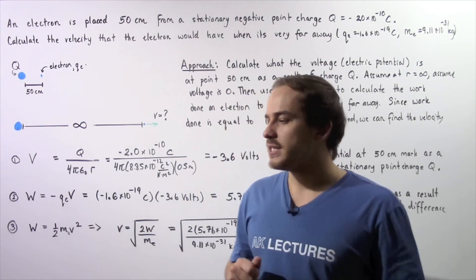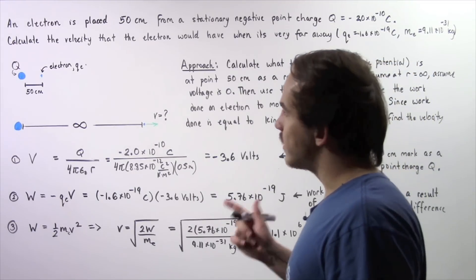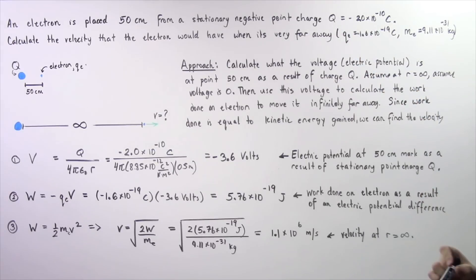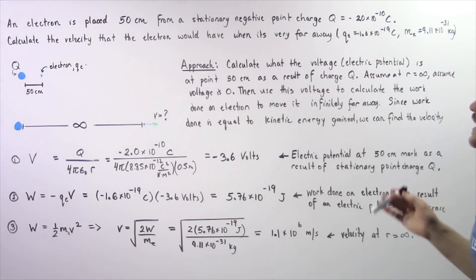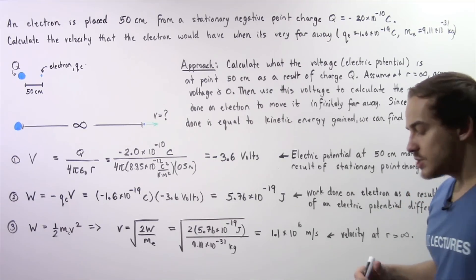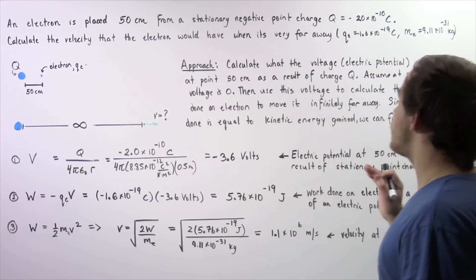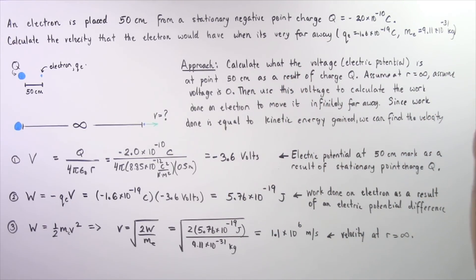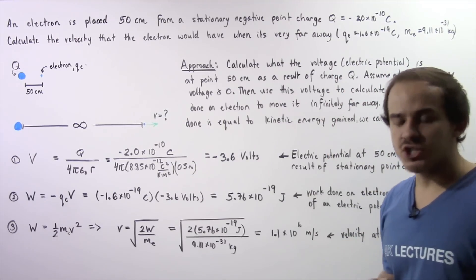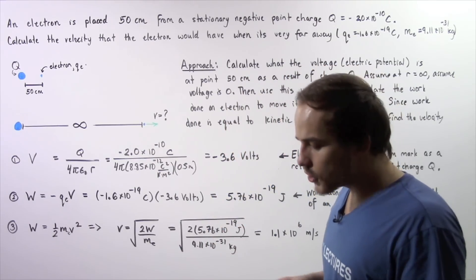Let's look at the following example that deals with electric potential and electric potential difference. An electron is placed 50 centimeters from a stationary negative point charge Q, where Q equals negative 2.0 times 10 to the negative 10 Coulombs. We want to calculate the velocity the electron will reach when it's very far away. The charge on the electron is negative 1.6 times 10 to the negative 19 Coulombs, and the mass of the electron is 9.11 times 10 to the negative 31 kilograms.